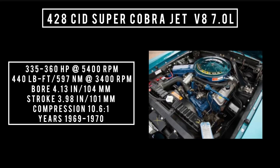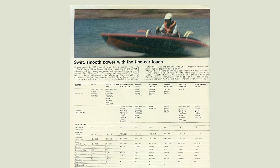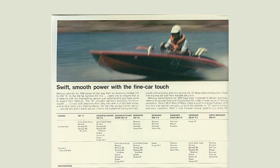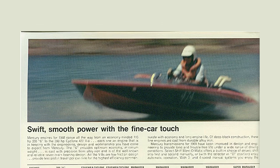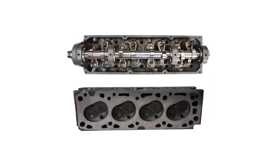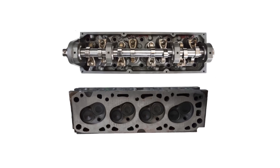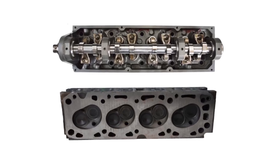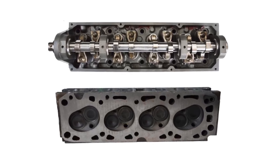In the mid-70s, Ford was working on a replacement for the FE engine, which was about 20 years old at that point. The 385 series would replace the FE engine, with displacements of 370, 429, and 460 — but that is an engine episode for another day.